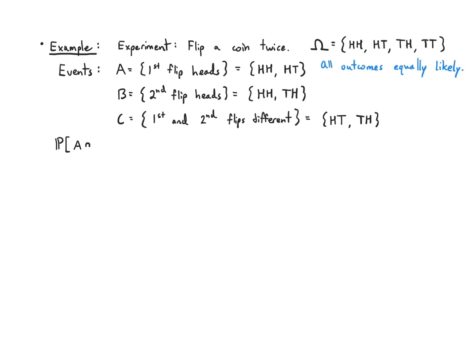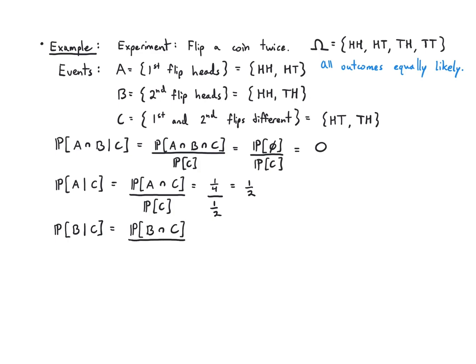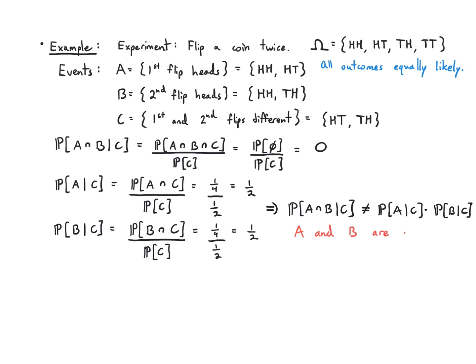Back to the coin flip example: P(A∩B|C) = P(A∩B∩C)/P(C) = 0/(1/2) = 0. P(A|C) = P(A∩C)/P(C) = (1/4)/(1/2) = 1/2, and P(B|C) = P(B∩C)/P(C) = (1/4)/(1/2) = 1/2. Since 0 ≠ (1/2)(1/2) = 1/4, P(A∩B|C) ≠ P(A|C)·P(B|C), so A and B are not conditionally independent given C.